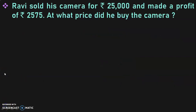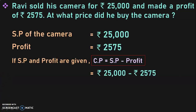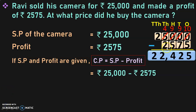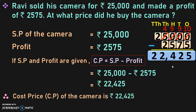Ravi sold his camera for rupees 25,000 and made a profit of rupees 2,575. At what price did he buy the camera? We need to find the cost price. Selling price and profit are given, so cost price equals selling price minus profit: 25,000 minus 2,575 equals 22,425. The cost price of the camera is rupees 22,425.